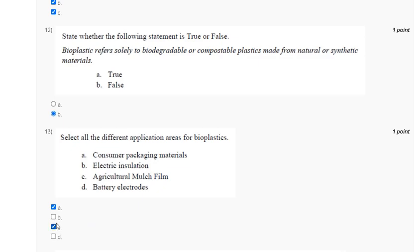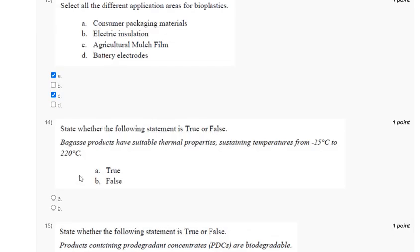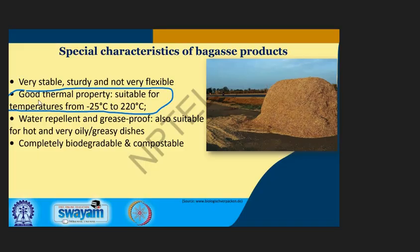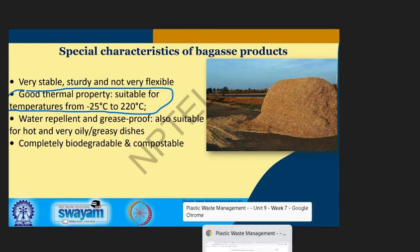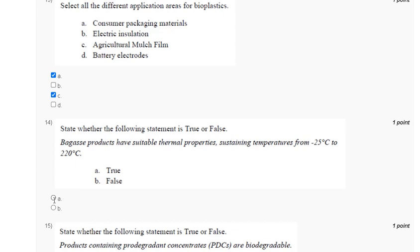Question 14: Bagasse products have suitable thermal properties with a setting temperature from 25 degrees Celsius to 220 degrees Celsius. Special characteristics of bagasse products include good thermal properties suitable for temperatures from 25 to 220 degrees Celsius. The correct answer to question 14 is option A.